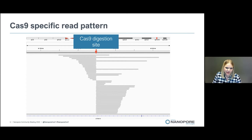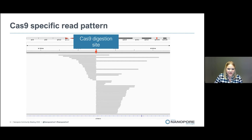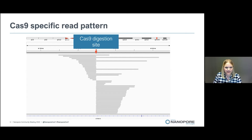When you have sequenced your libraries and aligned your reads to a reference, you end up with a very specific read pattern for molecules that Cas9 has digested, where basically all of the reads start or end at the same position, as you can see in this figure. This is true for the on-target site as well as all off-target sites, and it is something that our data analysis pipeline recognizes to compile a list of all on and off targets for the guide RNA.